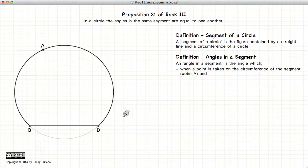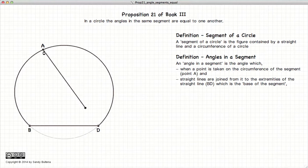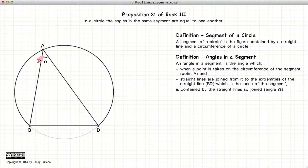Now another definition, angles in a segment. So we have our segment BAD, and we have a point A on the circumference of the circle. If we draw a line from A to D and A to B, the angle made by these two lines would be alpha. And again, BD is considered to be the base of the segment.